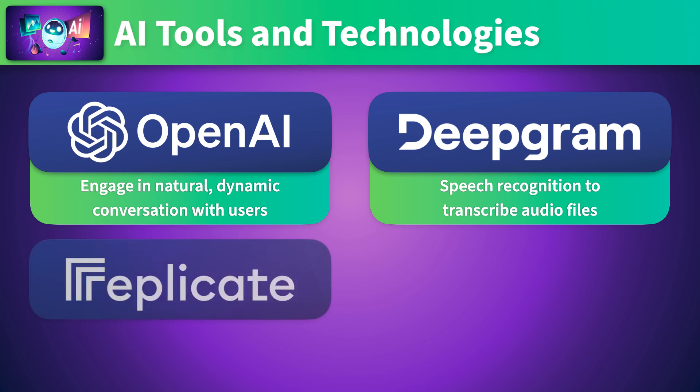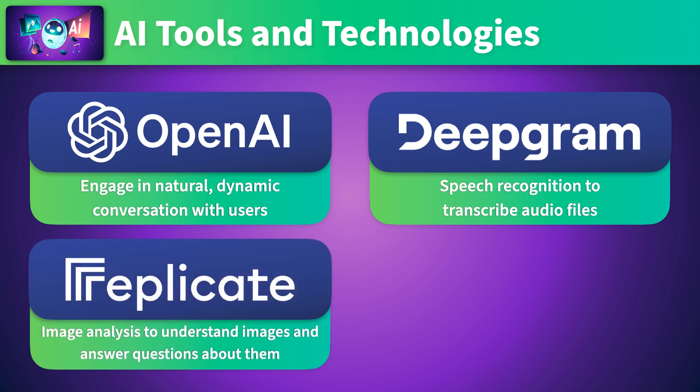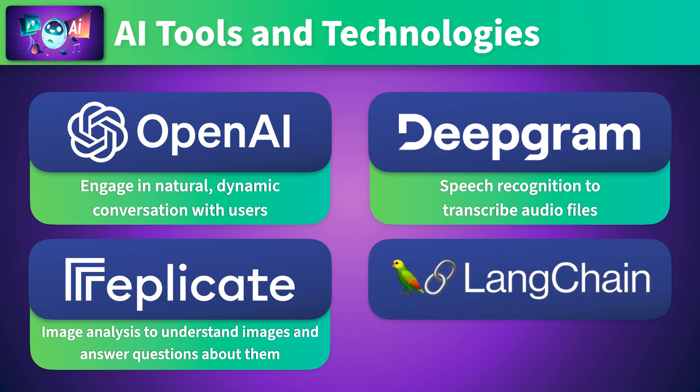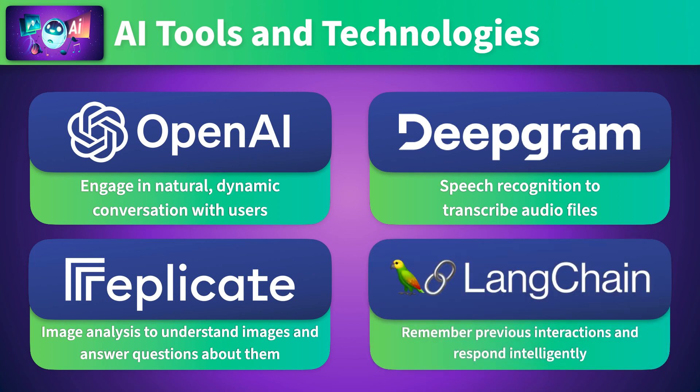We'll learn about Replicate, a game-changer in open-source AI. We'll use it to tap into the power of an image analysis model called Mini-GPT, so our app will be able to understand the content of images and respond intelligently to questions about them. And Langchain — we'll use this technology to empower our app with a unique form of memory, so it can remember previous interactions and respond intelligently based on accumulated knowledge.